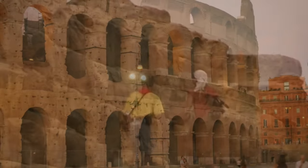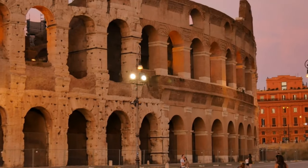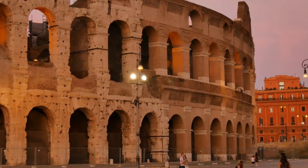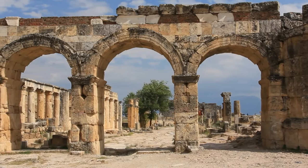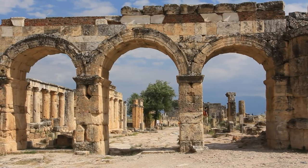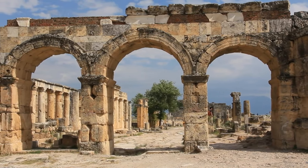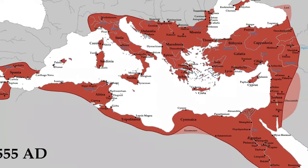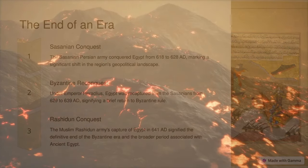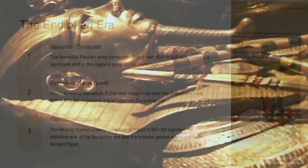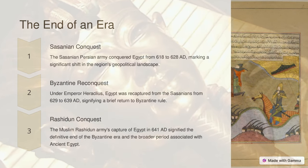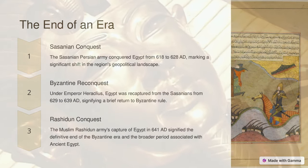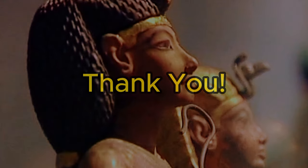In the 4th century, as the Roman Empire divided, Egypt found itself in the Eastern Empire with its capital at Constantinople. In the waning years of the empire, Egypt fell to the Sasanian Persian army in the Sasanian conquest of Egypt, from 618 to 628 AD. It was then recaptured by the Byzantine emperor Heraclius, from 629 to 639 AD, and was finally captured by the Muslim Rashidun army in 641 AD, marking the end of both Byzantine rule and of the period typically considered as ancient Egypt.